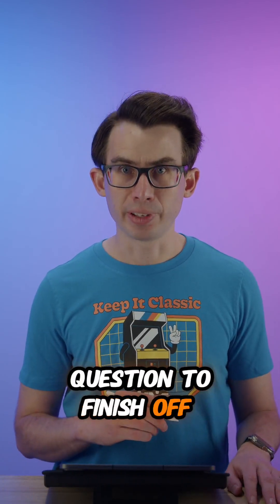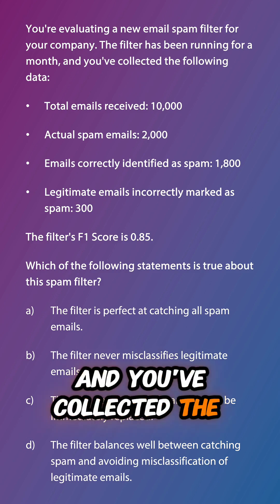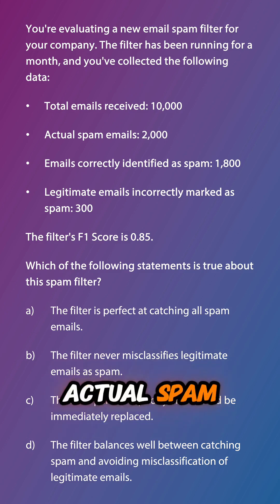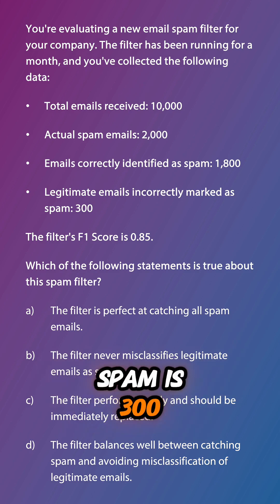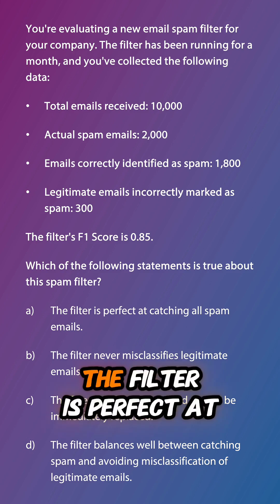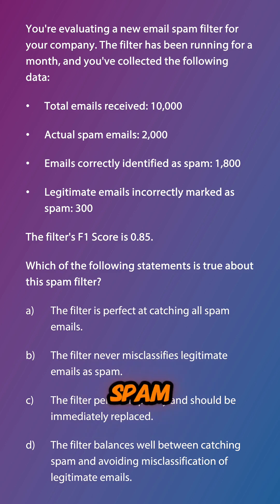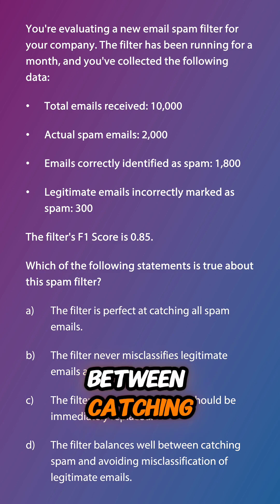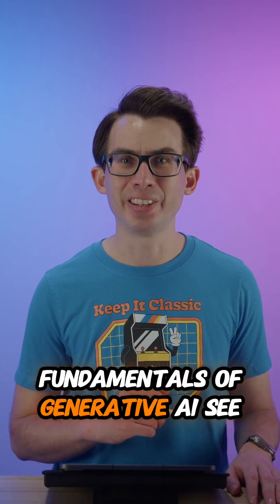Let's do a review question to finish off this episode. You're evaluating a new email spam filter. Over one month: 10,000 total emails received, 2,000 actual spam emails, 1,800 correctly identified as spam, 300 legitimate emails incorrectly marked as spam, and the filter's F1 score is 0.85. Which statement is true? A) The filter is perfect at catching all spam. B) It never misclassifies legitimate emails. C) It performs poorly and should be replaced. Or D) It balances well between catching spam and avoiding misclassification. Post your answer in the comments — next episode we kick off Domain 2, Fundamentals of Generative AI. See you then.